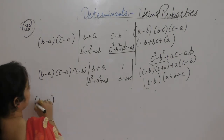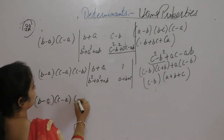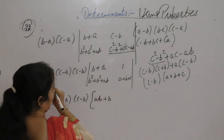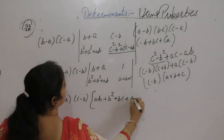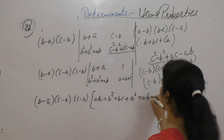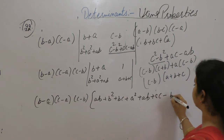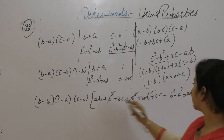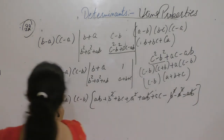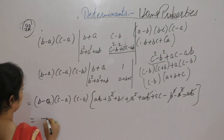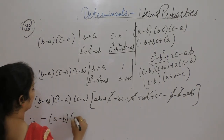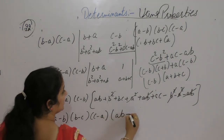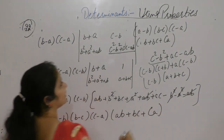So (b minus a)(c minus a)(c minus b): with (b minus c) as a common factor — so minus sign — gives (c minus b), and expanding the remaining bracket: b squared plus bc plus a squared plus ab plus ac minus b squared minus a squared, the b squared and a squared terms cancel, and ab cancels, leaving ab plus bc plus ca. Taking negative common from (b minus c) gives (c minus a), so the final result is (a minus b)(b minus c)(c minus a)(ab plus bc plus ca).